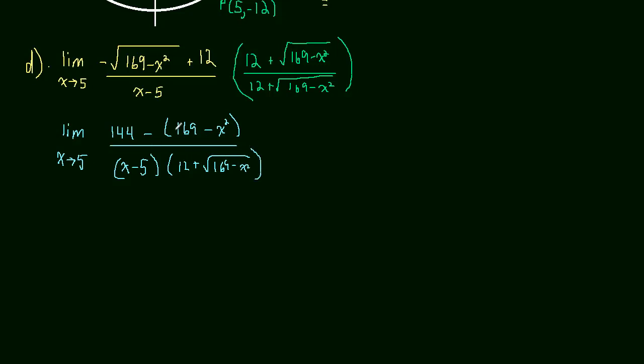And so let's simplify a little bit. 144 minus 169. This will be equal to the limit as x approaches 5 of negative 25 plus x squared. So it's 144 minus 169, that's negative 25. And then we have the minus sign distributes to the x squared, which makes it positive.